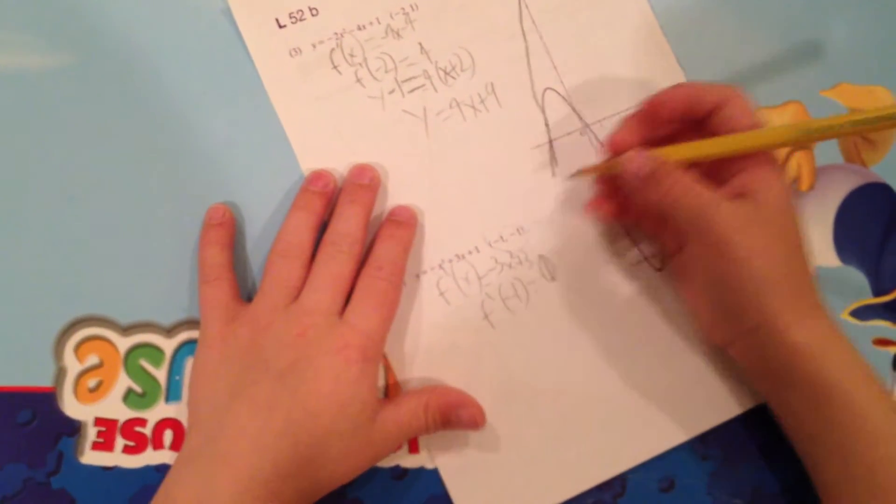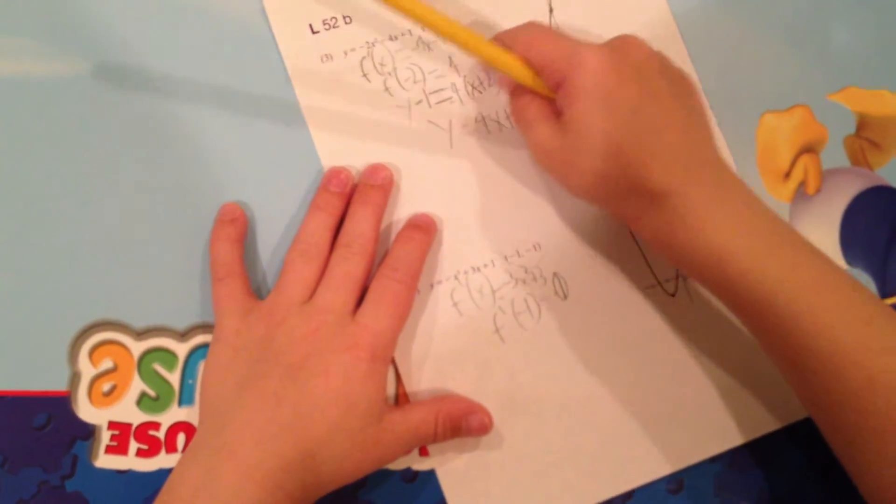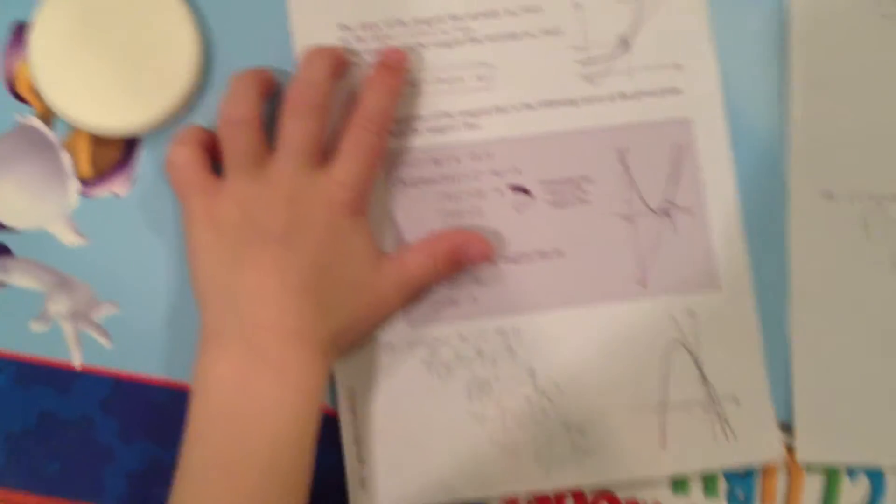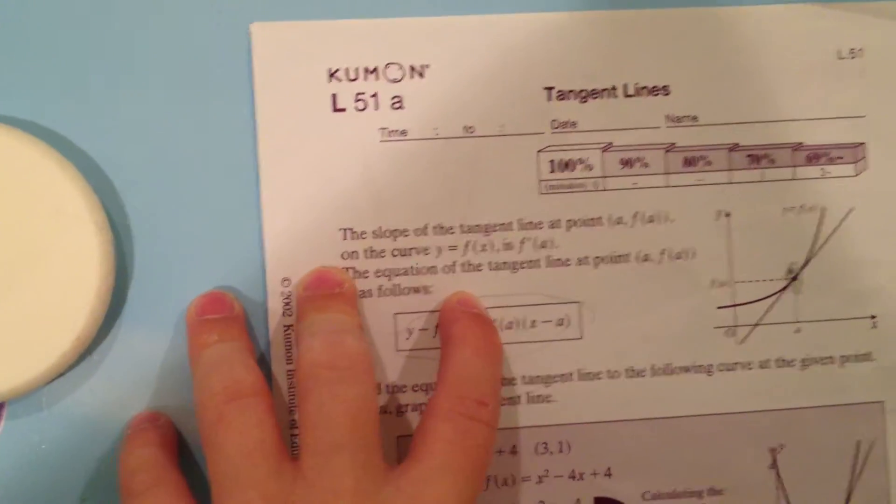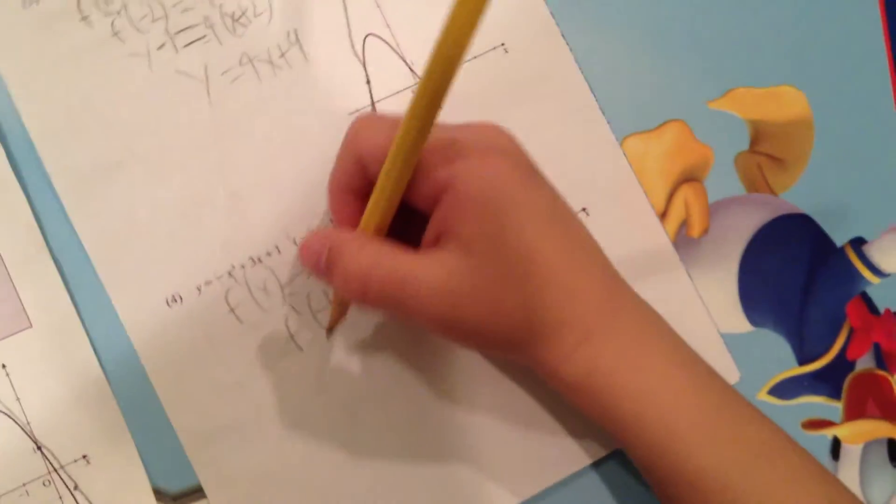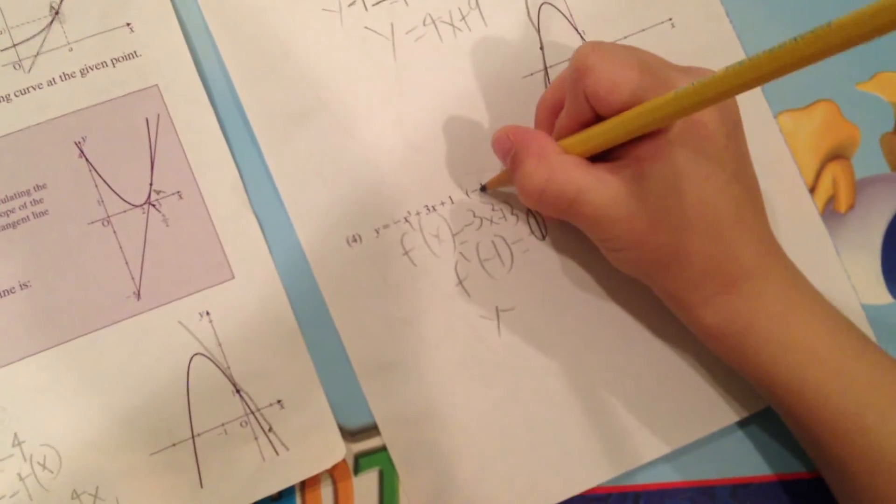Now, we want to find the equation of the tangent line. Well, the formula is y minus f of a equals f prime of a times x minus a. f prime of a is y minus f of a. a is this.